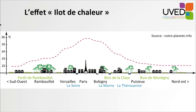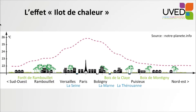We also have the heat island effect: buildings release and reflect heat, contrary to green spaces which absorb heat. Because of this phenomenon, there may be up to 10 degrees Celsius of difference between the center of town and the peri-urban areas.